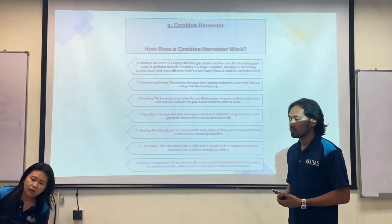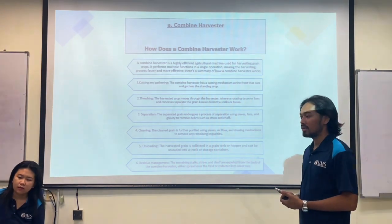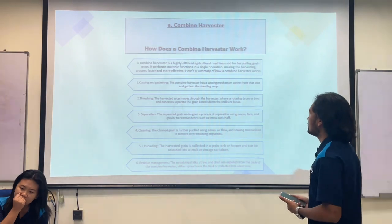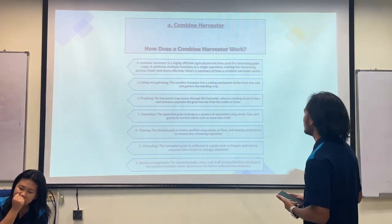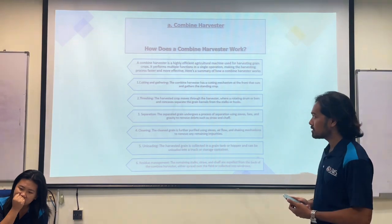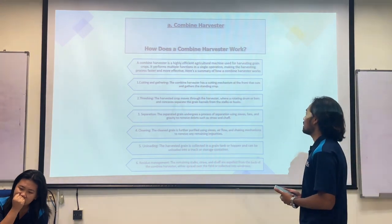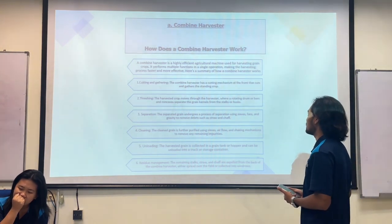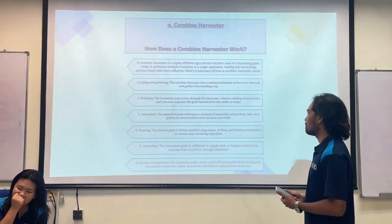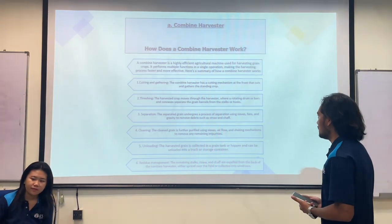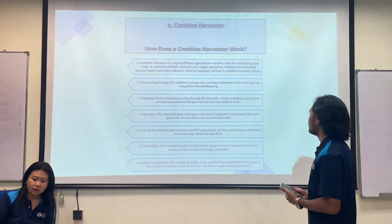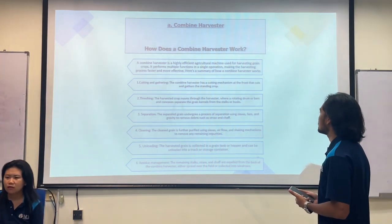How does a combined harvester work? A combined harvester is a highly efficient agricultural machine used for harvesting grain crops. It performs multiple functions in a single operation, making the harvesting process faster and more effective. Here is a summary of how the combined harvester works.